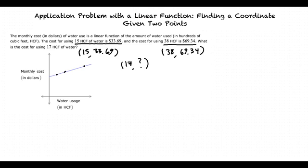We will first find the slope for our line. The slope formula, M, is equal to (Y2 - Y1) / (X2 - X1). So in this case, M equals (69.34 - 33.69) / (38 - 15). After some quick subtraction and division, we find that our slope is equal to 1.55.